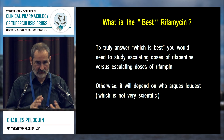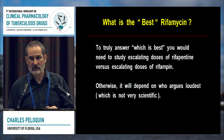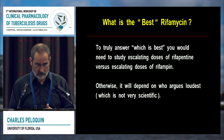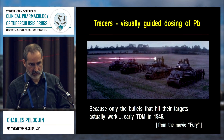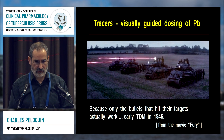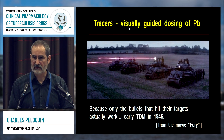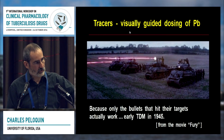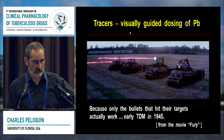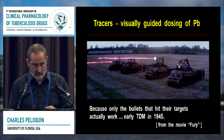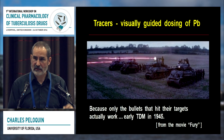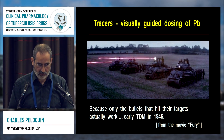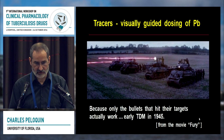What were these soldiers doing with those flashy things? Those are tracer bullets — visually guided dosing of lead, even back in 1945. Because the enemy is shooting back at you and trying to kill you, these guys knew that only the bullets that hit the targets actually work. Spraying the tree line does nothing. So this is early therapeutic drug monitoring, back in 1945 — from the movie Fury.